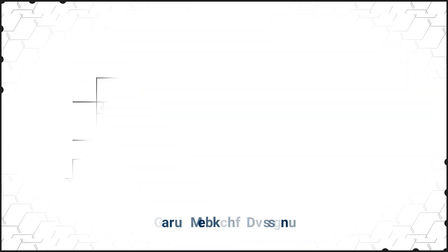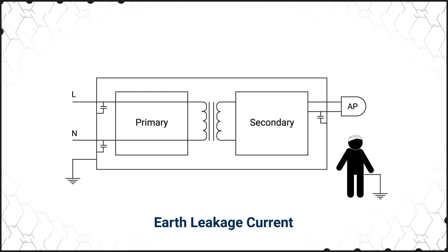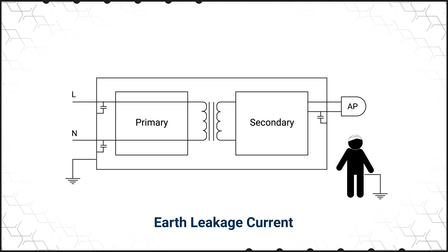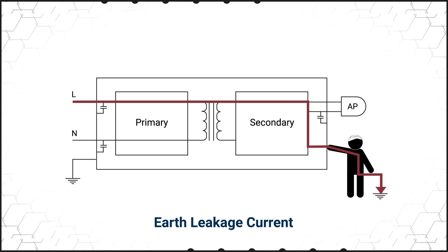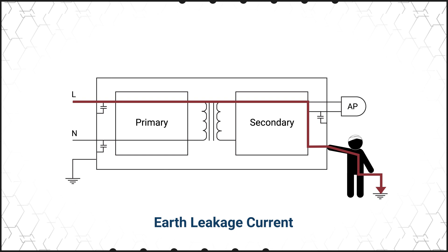Earth leakage current is current that flows from the mains to earth. This current normally flows through the earth conductor of protectively earthed equipment. However, if the protective earth connection is broken, this current can find an alternate path to earth, such as through the patient or operator.